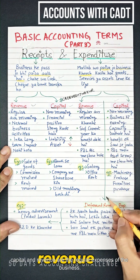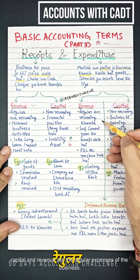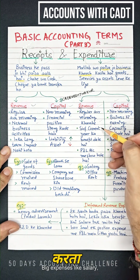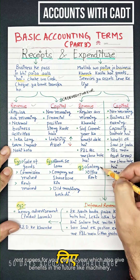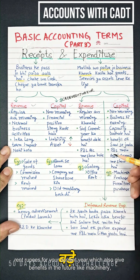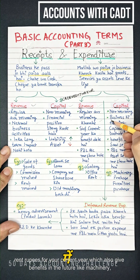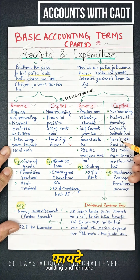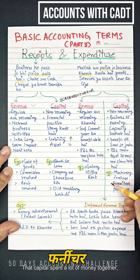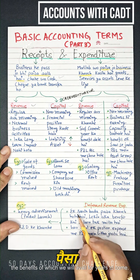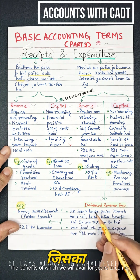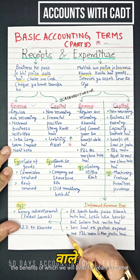First, revenue expenditure — these are regular, recurring business expenses like salary and rent, which benefit only the current year. Second, capital expenditure — big expenses like purchasing machinery, building, or furniture, where you spend a large amount and receive benefits for years to come.